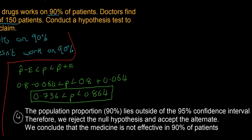So here it is and we'll read it through. So the population proportion, which is 90%, lies outside of the 95% confidence interval. Therefore, we reject the null hypothesis and accept the alternate. We conclude that the medicine is not effective in 90% of patients. So it's just a sort of formal language that sometimes makes hypothesis tests a little bit different, but the maths is very much the same. So we've already done the maths before, it's just the kind of formal language for the hypothesis test is the only thing that is different.